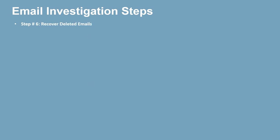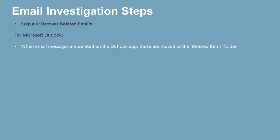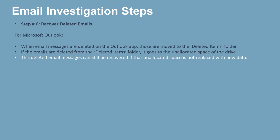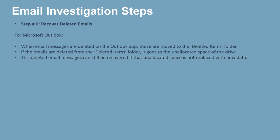Step six: recover deleted emails. For Outlook, when emails are deleted they are moved to the deleted items folder. If those emails are further deleted from the deleted folder, they go to unallocated space on the hard drive. These can still be recovered if that unallocated space has not been replaced with new data — you can undelete and recover all lost emails.